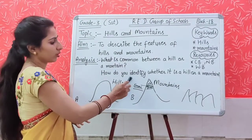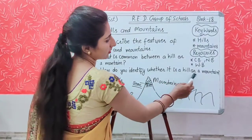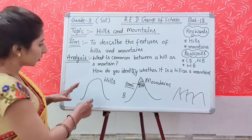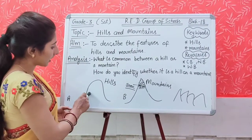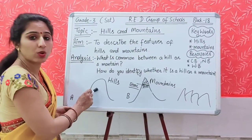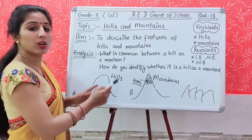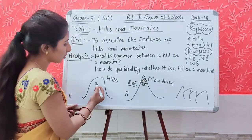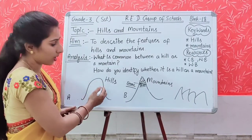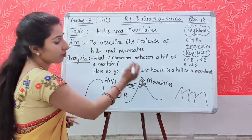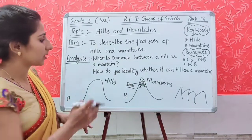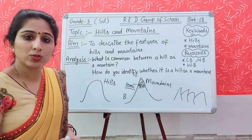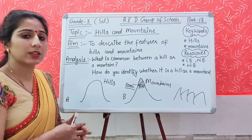How do you identify whether it is a hill or a mountain? The hilltops are rounded — they are not pointed like mountains. Mountain peaks are sharp, and most mountains are covered with snow. From these features we can easily identify whether it is a hill or a mountain.